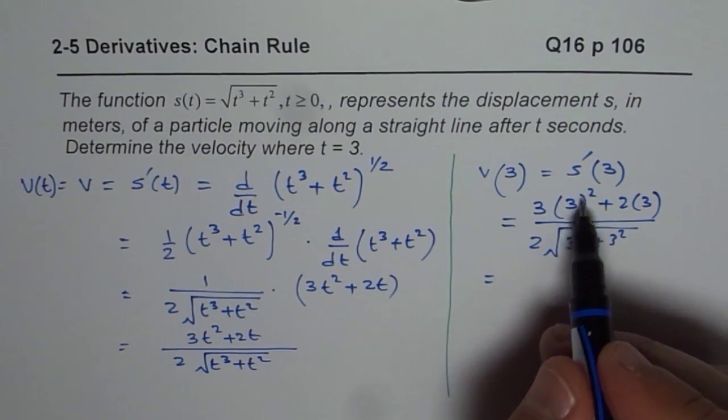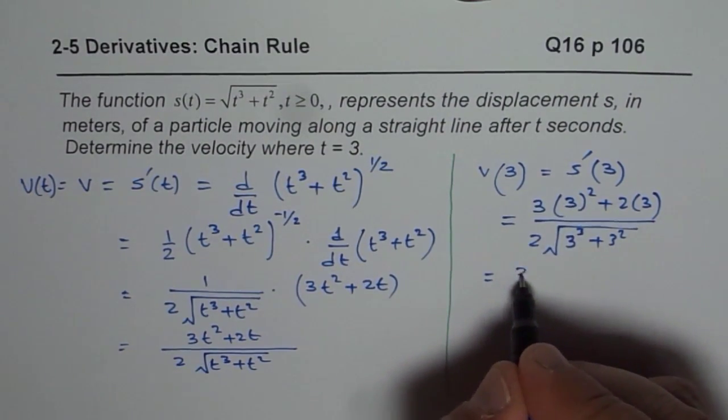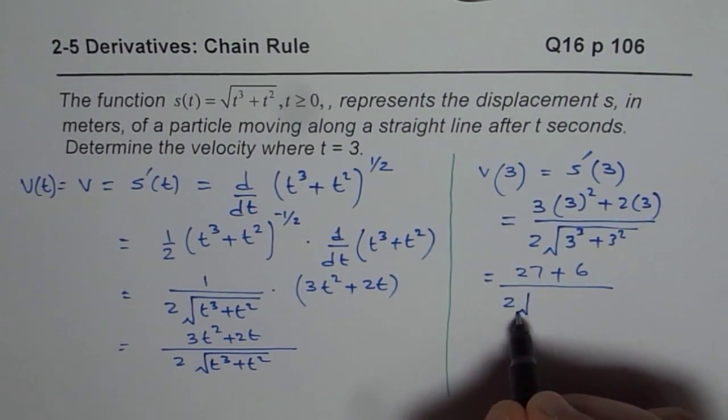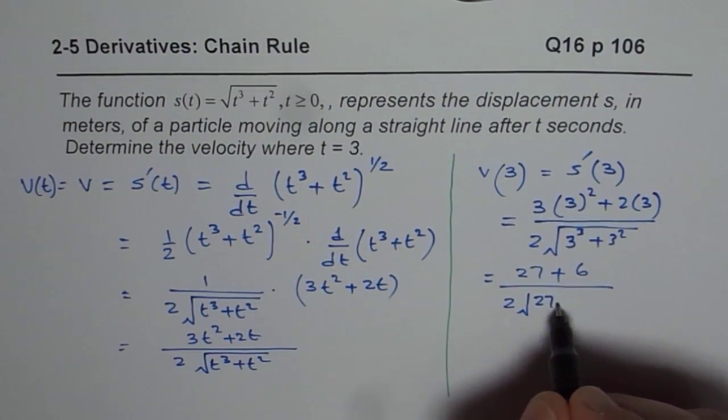That gives us 3 square is 9 times 3 is 27, plus 2 times 3 is 6, divided by 2 times square root of 27 plus 9.